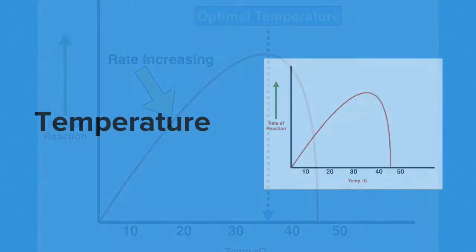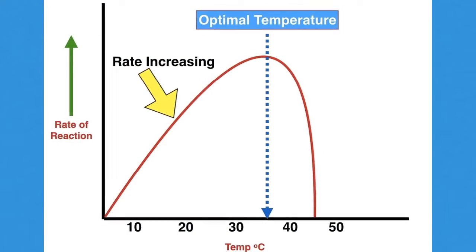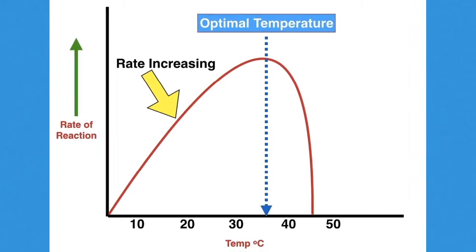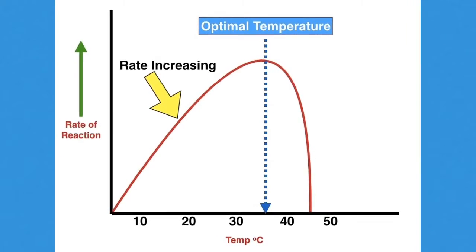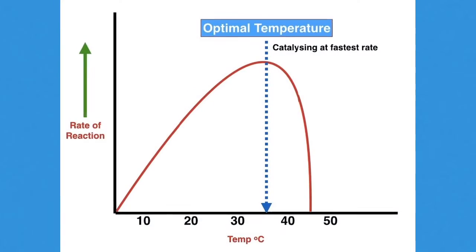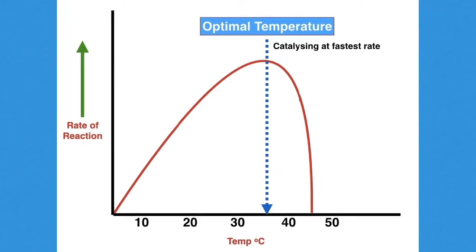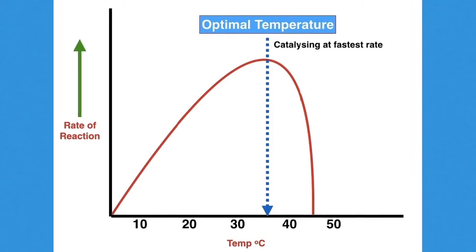Let's discuss temperature. Increasing the temperature of an enzyme-controlled reaction will result in an increase in the rate of reaction up to a point. The rate or speed of the reaction will increase until such time as the optimal temperature is reached.